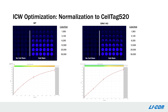What's exciting is that with Odyssey-M, we can now move normalization into a visible channel, leaving both IR channels open for target analysis. Here, the wild-type and ERK-1 knockout HeLa cells were diluted and then stained with CellTag 520. CellTag 520 shows linear signal in the same range of cell numbers as CellTag 700.